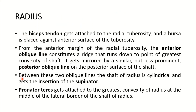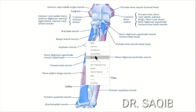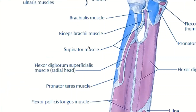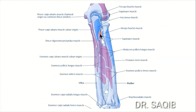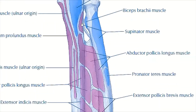Between the two oblique lines, the shaft of the radius is cylindrical and receives the insertion of the supinator muscle. Here you can see the supinator muscle on the radius in both anterior and posterior views.